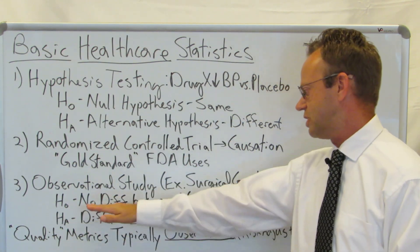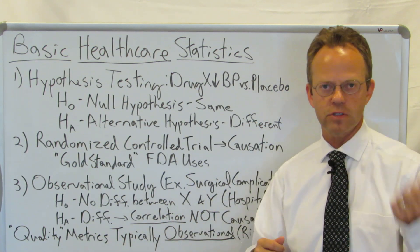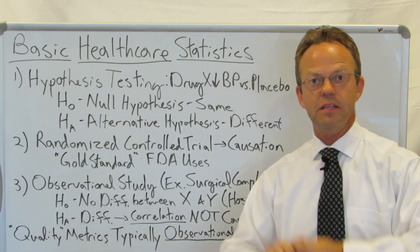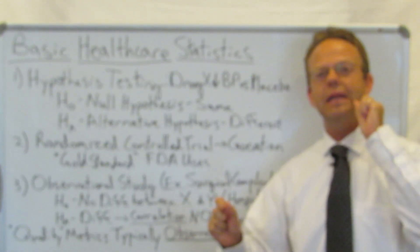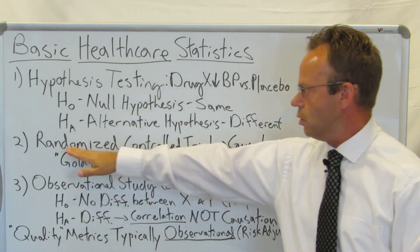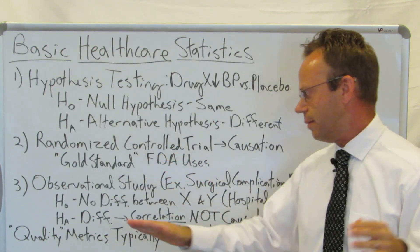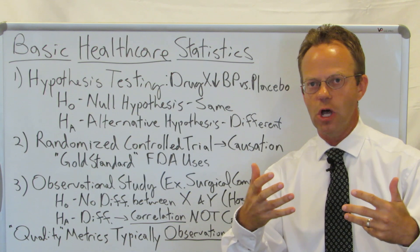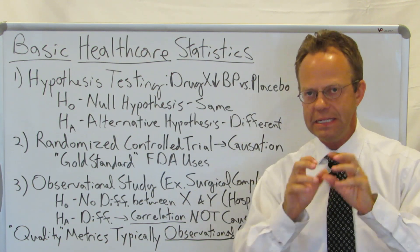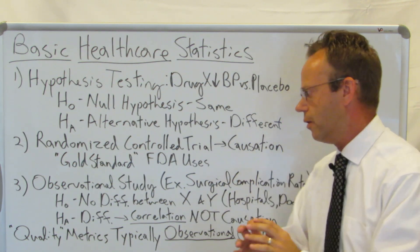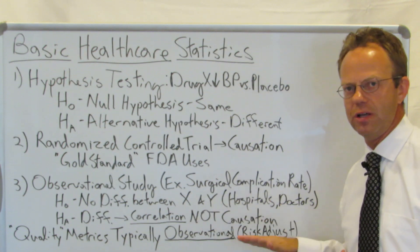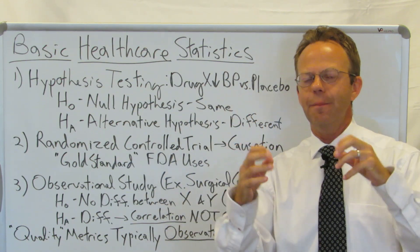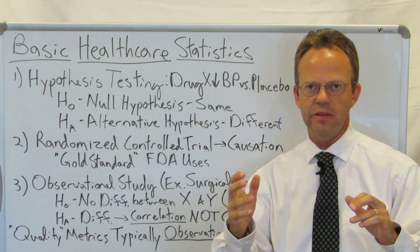Again, you can have a null hypothesis — there's no difference between one hospital or another, no difference between one surgeon or another, no difference between one state or metro area and another — and an alternative hypothesis that there is a difference. Now, in an observational study, because it is not randomized, you don't randomize who went to one hospital or surgeon — it just happened on its own. So because we cannot prospectively randomize it, an observational study only proves correlation, not causality. It's the whole rooster crowing and the sun rising thing — they happen together, but that doesn't mean the rooster crowing caused the sun to rise.